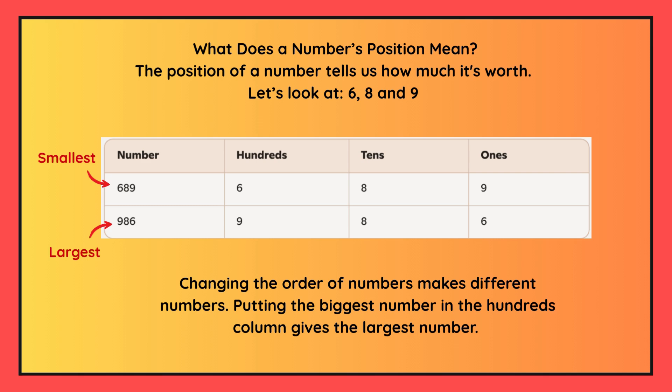To make the largest number that we can, we do the opposite. We put the largest number in the hundreds column and the smallest number in the ones column. So the smallest number we can make is six hundred and eighty-nine, and the largest number we can make is nine hundred and eighty-six.